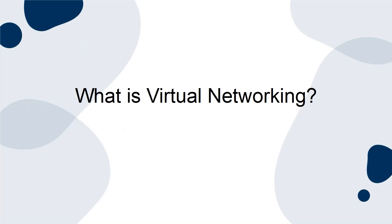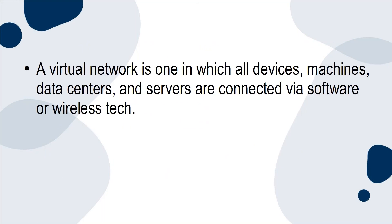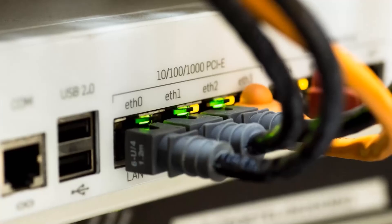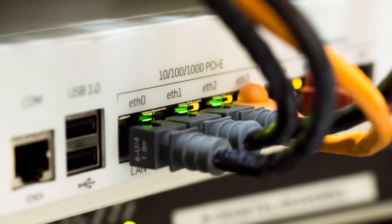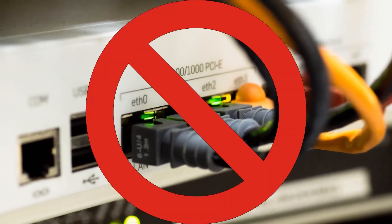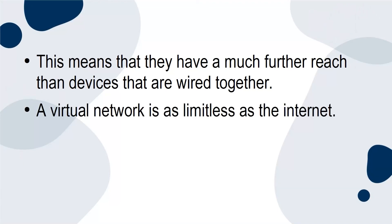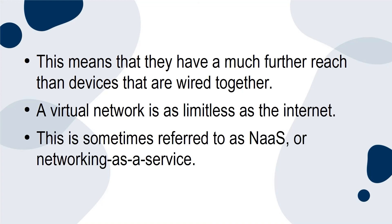What is virtual networking? A virtual network is one in which all devices, machines, data centres and servers are connected via software or wireless tech. This means that the reach of the network can be expanded as far as required for maximum efficiency. A virtual network does not follow the conventional rules of networking because it's not wired — the devices interact via internet technology. This means they have a much further reach than devices that are wired together. A virtual network is as limitless as the internet, and this is sometimes referred to as NaaS, or Networking as a Service.